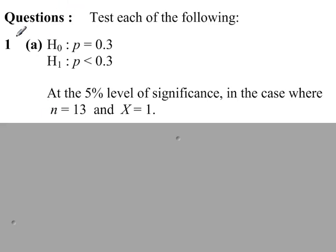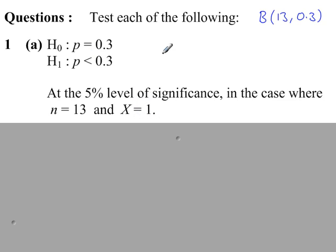Question 1: n is 13, p is 0.3. Because H1 says less than, we're going to test this value and work out P(x ≤ 1). That value comes from the observed count, and the less than or equal to is based on the less than in H1.